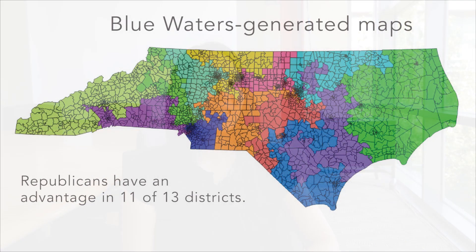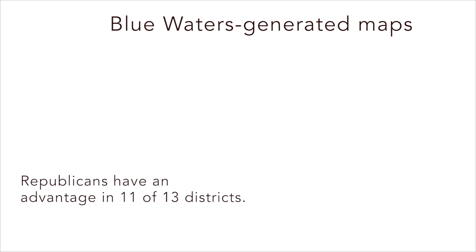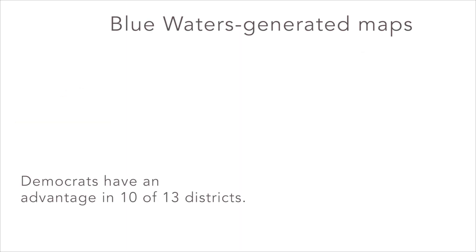So we created a computational tool that automates the redistricting process. It allows you to take humans out of the process, and it allows you to create maps in any way that you want to specify. So let's say the Republicans are accusing the Democrats of a partisan gerrymander, and they say they were using partisanship when they drew the lines, and the Democrats say they really weren't or they were only using it in a limited capacity.